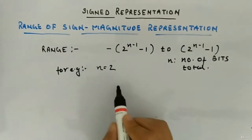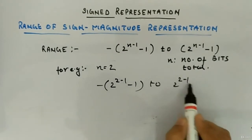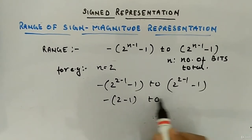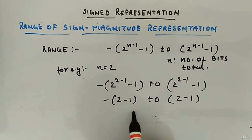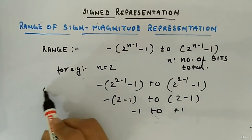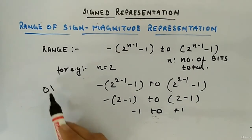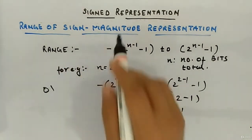Let's take a smaller example. If n equals 2, then 2 to the power 2 minus 1, minus 1, to 2 to the power 2 minus 1, minus 1. This gives 2 to the power 1 minus 1, which is 2 minus 1 equals 1. So the range is minus 1 to plus 1. With n equal to 2, if you have two bits in your hand, you can represent from minus 1 to plus 1. That's the range of sign-magnitude representation.